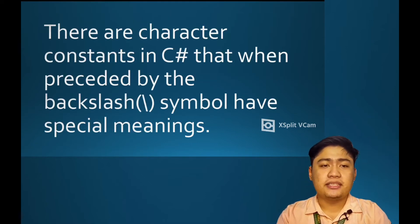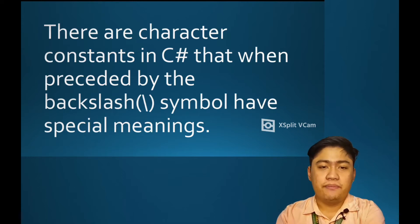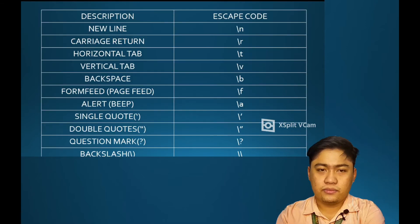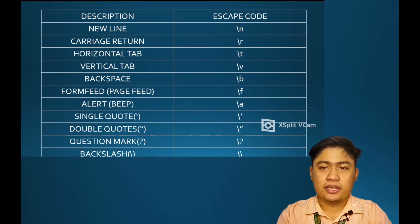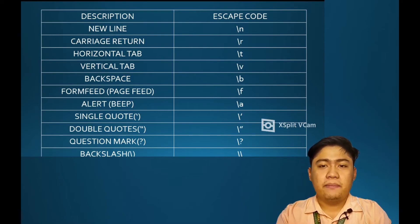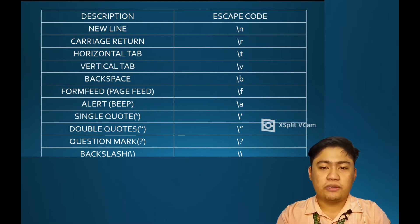There are character constants in C-Sharp that when preceded by the backslash symbol they have special meanings. The following table shows the different character constants such as new line, carriage return, horizontal tab, vertical tab, backspace, form feed, alert, single quote, double quote, question mark, and backslash.